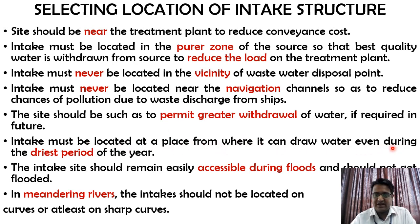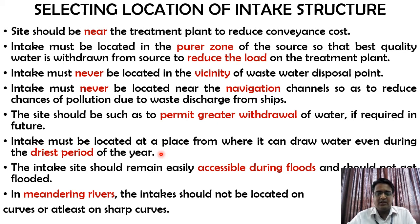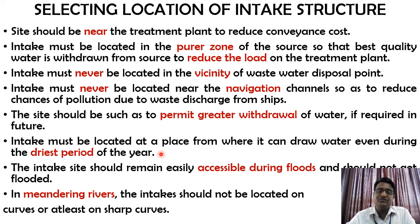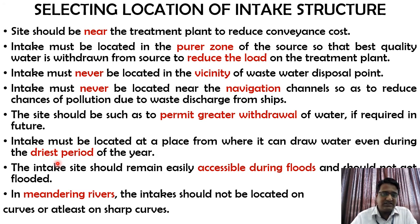The intake must be located at a place from where it can withdraw water even during the driest period. Most central and southern rivers in India are non-perennial — they flow only during the rainy season, perhaps four months, and are dry the rest of the time. The intake structure should be placed where the depth of flow is greater or the bed level is at its minimum, so water can be withdrawn even in the driest period.